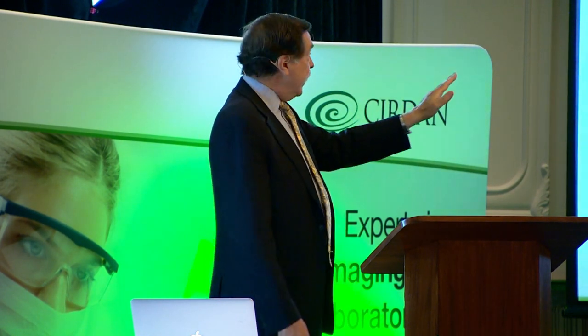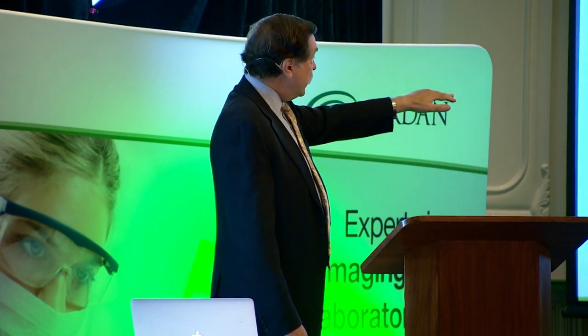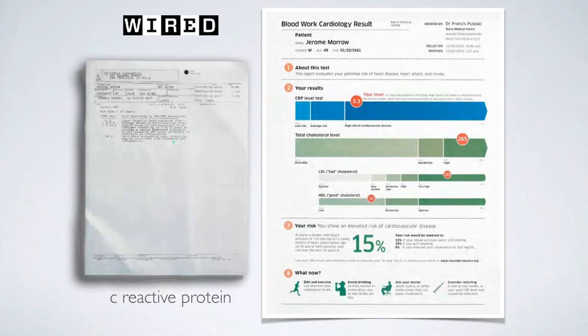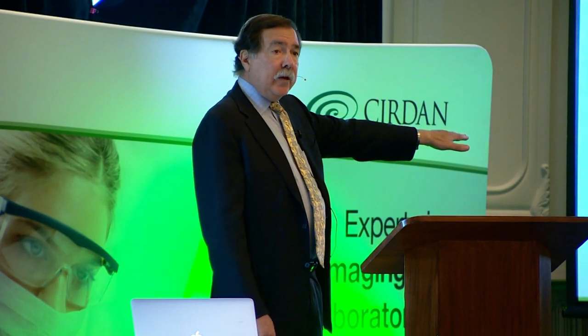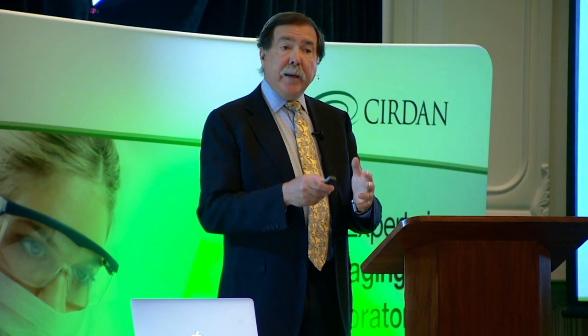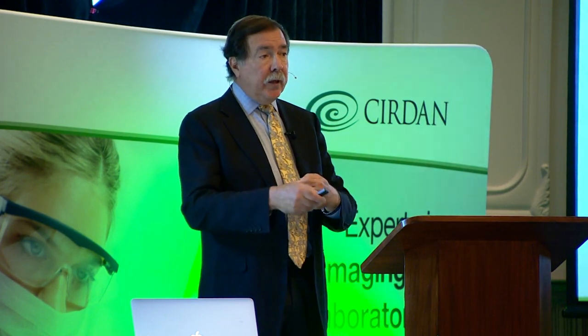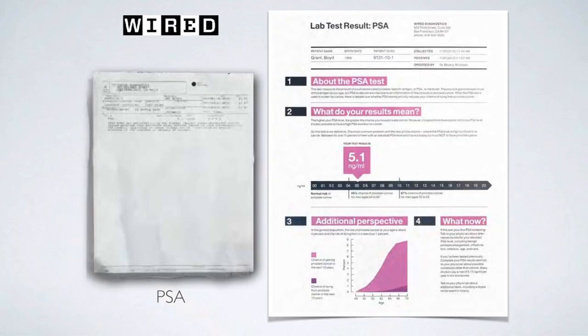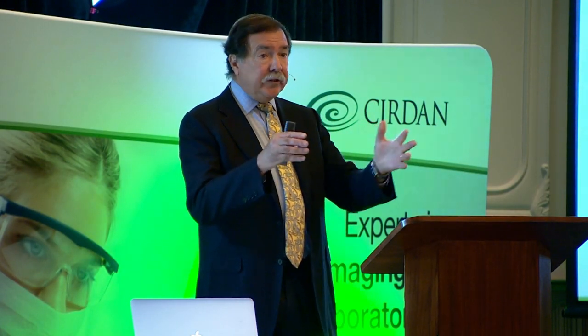A web designer reimagined that CRP report: it shows the test, the result, where you fall on a continuum with a graph, combines it with cholesterol to give a cardiovascular risk score, and tells you what to do — exercise, diet — if the result is poor. Same thing for PSA: instead of just a number the patient can't interpret, the redesigned report shows their position on a range with follow-up recommendations. This would be a very impactful, proactive way to engage patients.